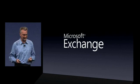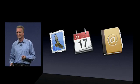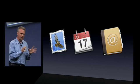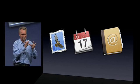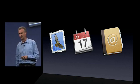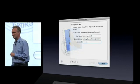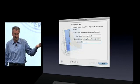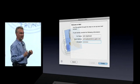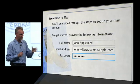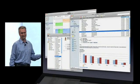We've decided to build Exchange support into Snow Leopard, into the main three communication applications: Mail, iCal, and Address Book. It's really simple to set up, thanks to auto-discovery in the Exchange server. You just fill in your email address and your password, and that's it — you are set up in all three apps.